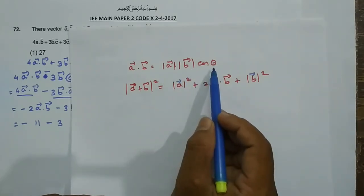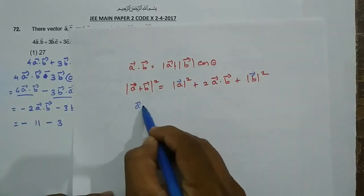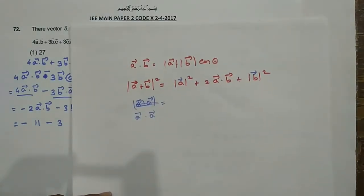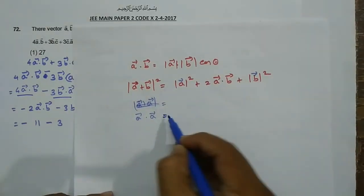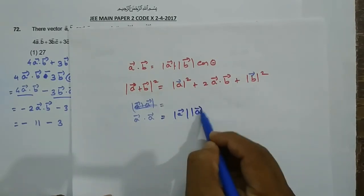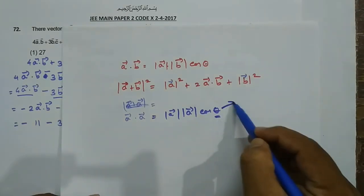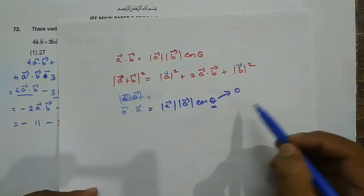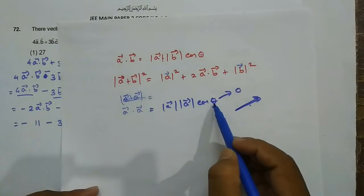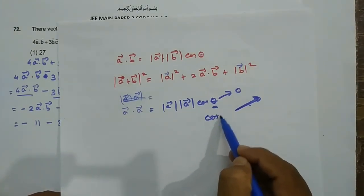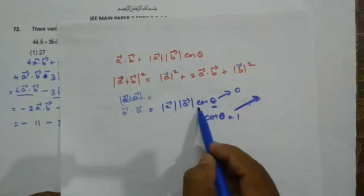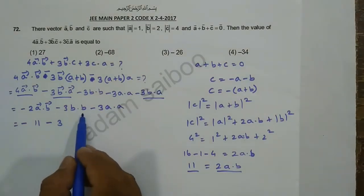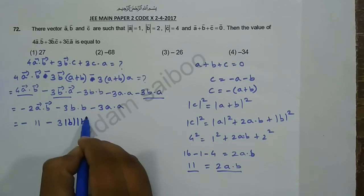Now, A·A equals modulus of A vector times modulus of A vector times cos theta. Since they are the same vector, theta is 0, and cos 0 equals 1. So A·A equals modulus of A squared.